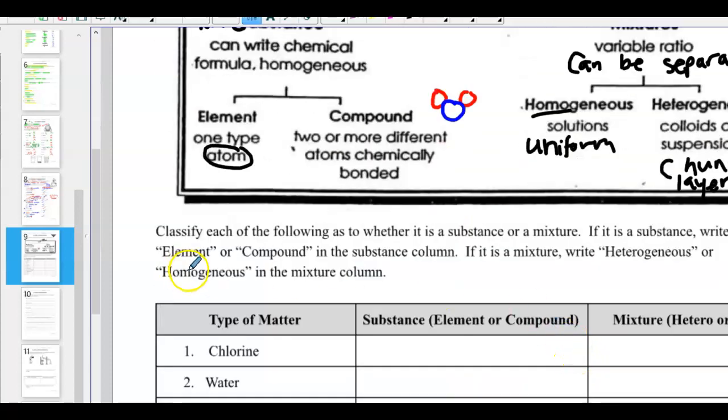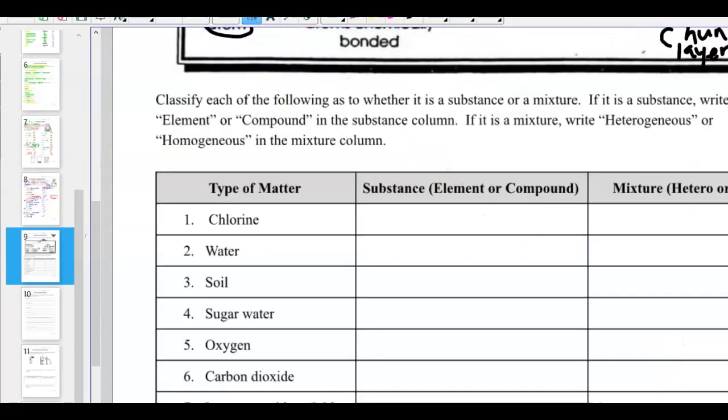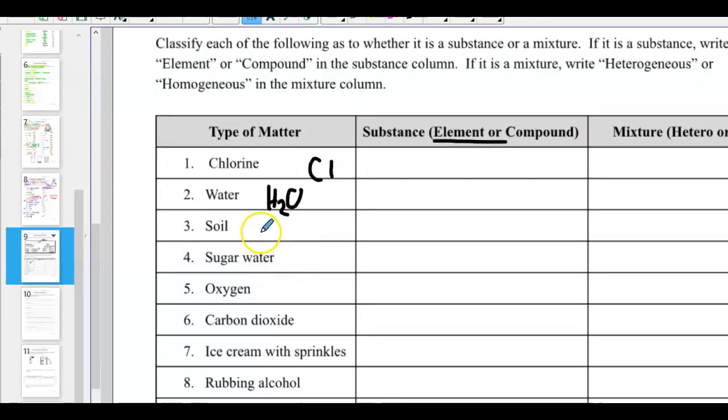So there's some key reminders for us. So we're going to go through and classify each of them as either a pure substance, then tell me element or compound. And if it's not a substance, it's going to be a mixture. And tell me heterogeneous or homogeneous. So easiest one to do, I think for me, would be to look for things that are on the periodic table. And I know they have a chemical symbol or I can look up their compound. Chlorine. Symbol is Cl. Water is H2O. I don't have a formula for soil. Sugar water is sugar plus water. Oxygen is O2.